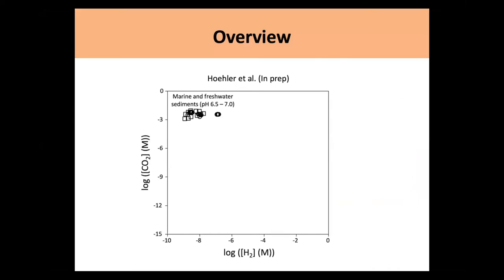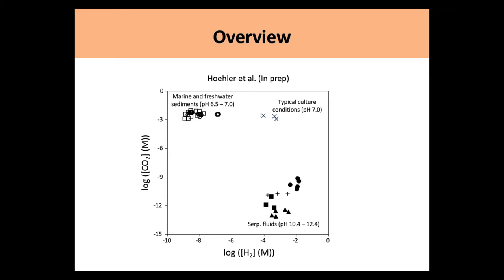To give an overview of methanogens, currently the majority of characterized methanogens exist in marine and freshwater sediments around pH 6.5 to 7. On this graph, the x-axis is hydrogen and the y-axis is CO2 — the two reactants for methanogenesis. Typically they exist at high CO2 and low hydrogen gas concentration. In typical culture conditions, we culture them at high hydrogen and high CO2 because that's where they're happiest. However, in serpentinized fluids, it's the opposite — high hydrogen and low CO2, which is peculiar because CO2 is a very important reactant. Note that this graph is on a log scale, so the fold change is more significant than it appears.